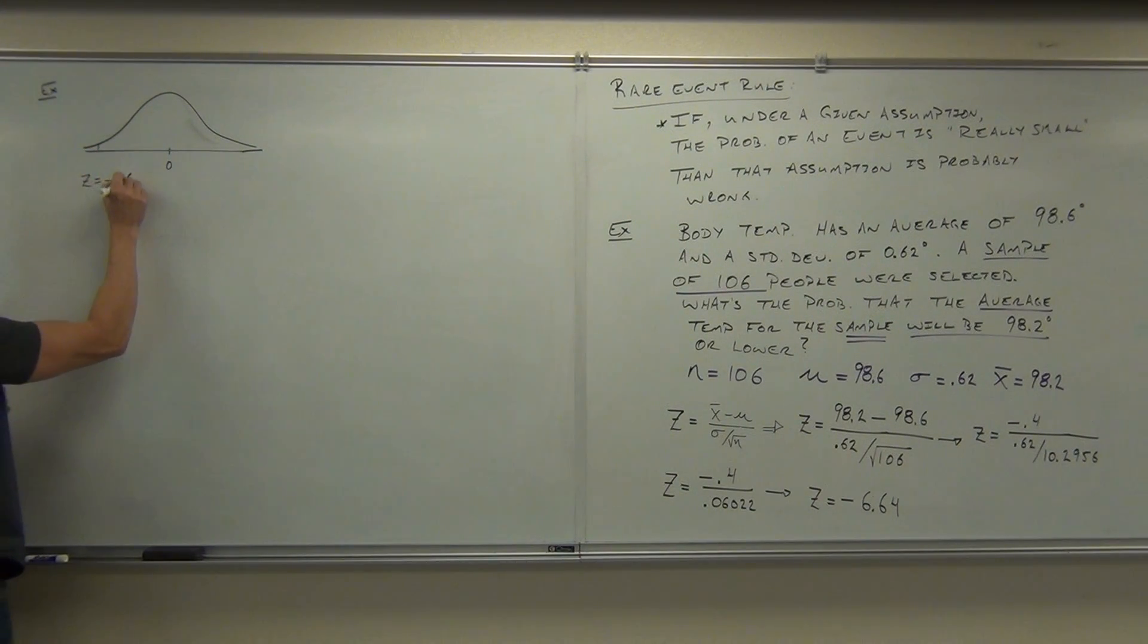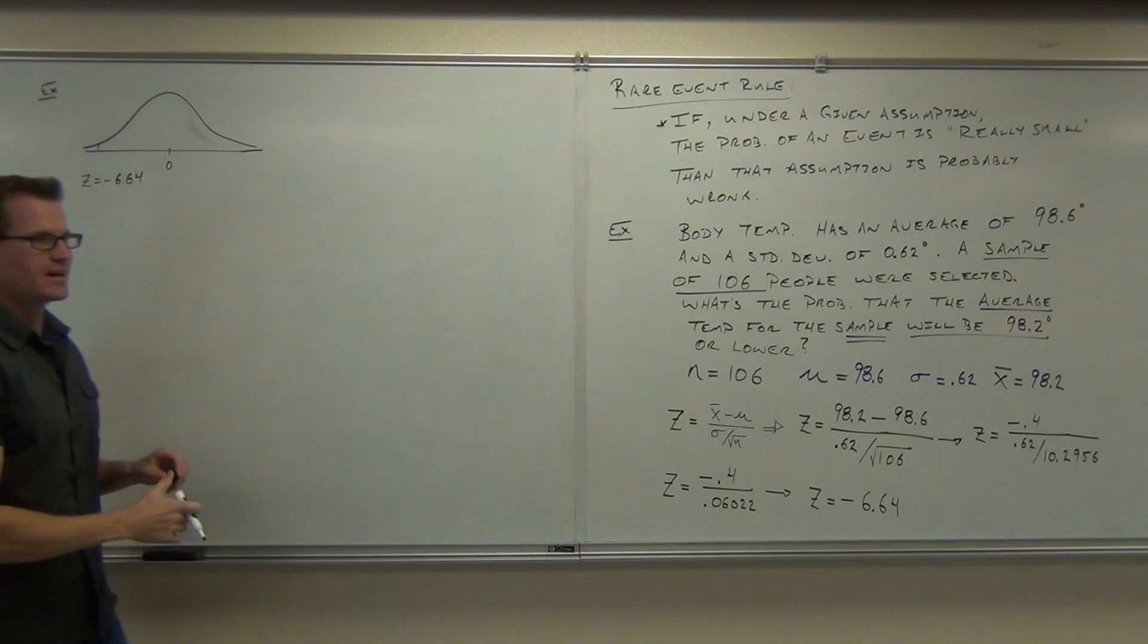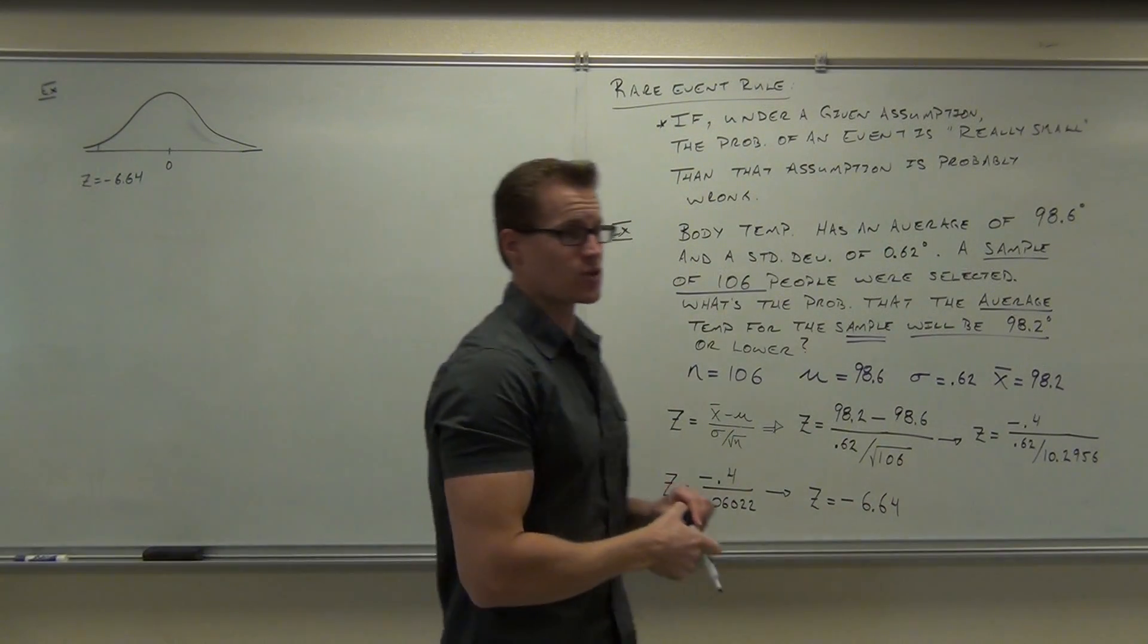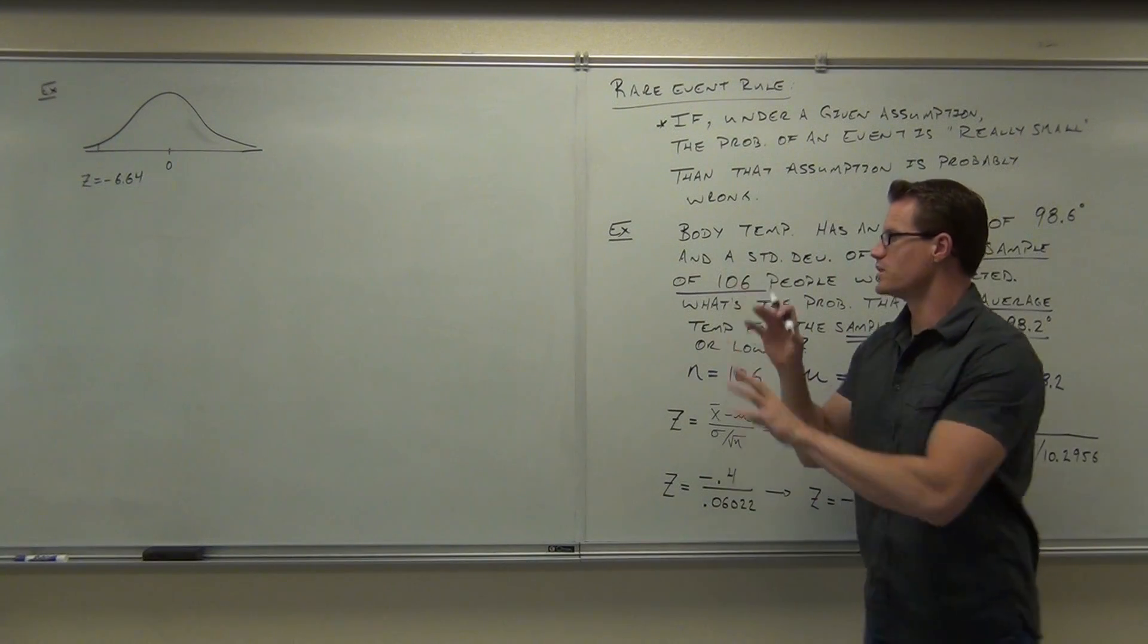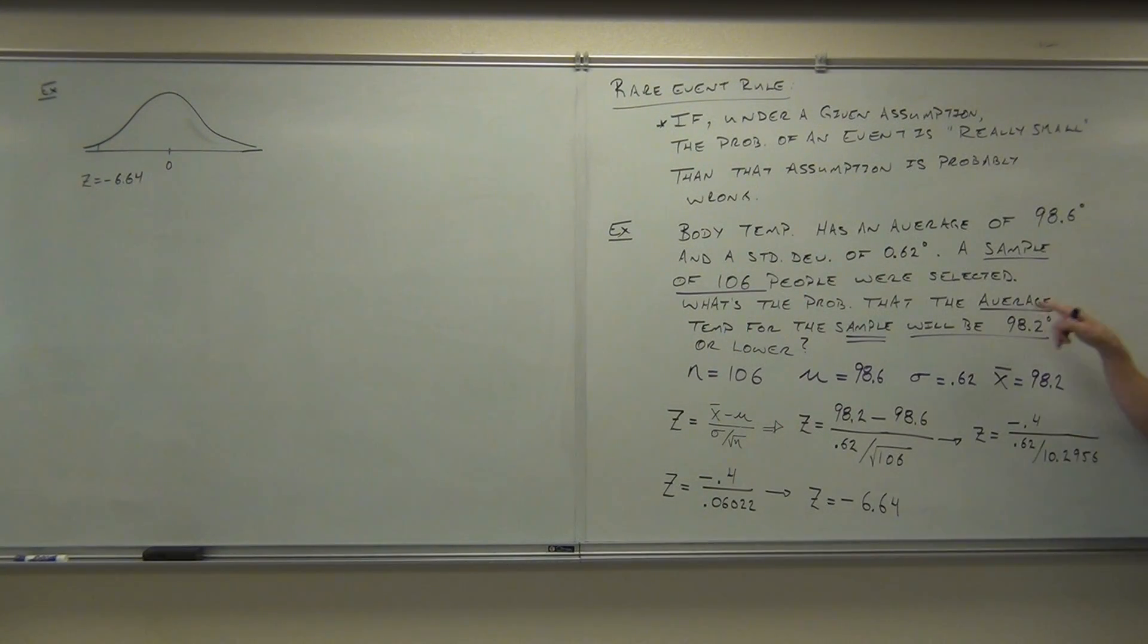Z equals negative 6.64. Now you've got to change your picture appropriately. So let's look at our question again. Are we trying to look for the area to the right or to the left? Read it carefully. 98.2 or lower?